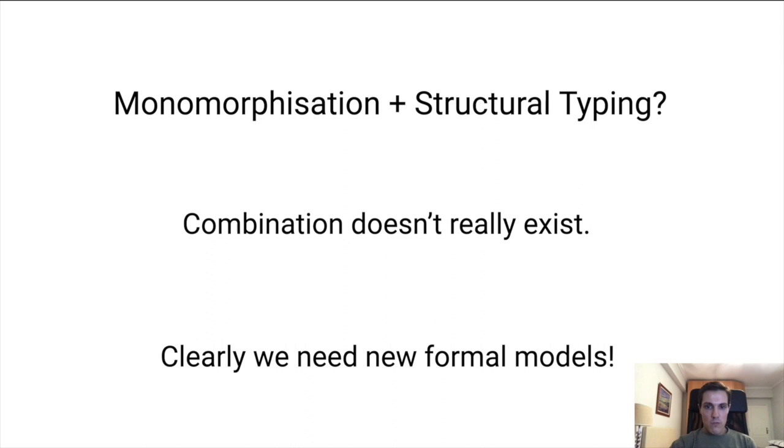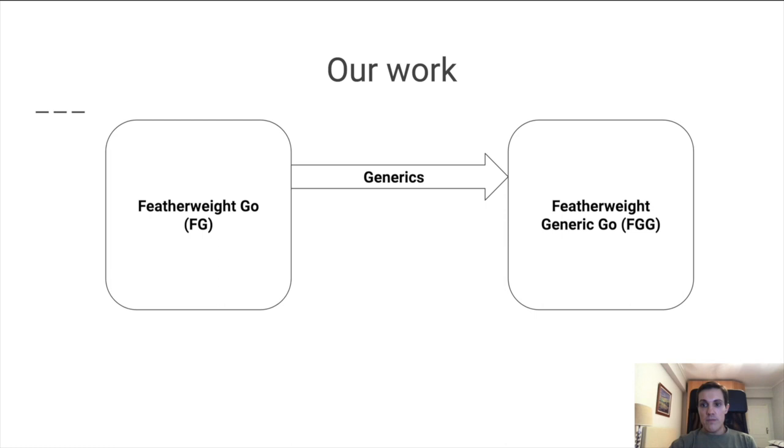Obviously, for academics, this means we need new formal models. So our work was to develop Featherweight Go, as we have called it, which is a minimal model for some of the key features of Go. We then extended it with generics to produce Featherweight Generic Go. We have also studied a formalization of monomorphization that allows us to essentially compile FGG back into FG.